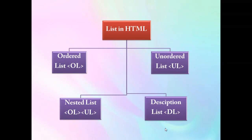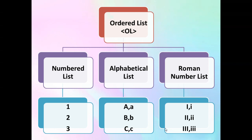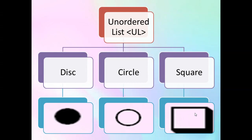Now let us understand the ordered list. Ordered list means a list with a particular sequence. We can create three different types of ordered list: a list of numbers, a list of alphabets (capital or small), and a list of Roman numbers (capital or small).